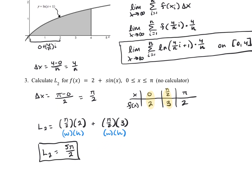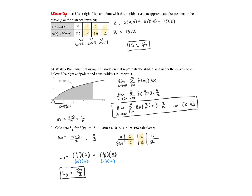For number 3, when it says calculate L sub 2 — that's a left Riemann sum with 2 subintervals, so 2 rectangles. If we're splitting into 2 rectangles, we subtract the upper endpoint minus the lower endpoint and divide by 2, so each rectangle is π/2 units wide. Using a t-chart: 0, π/2, and π. Since we're doing a left Riemann sum, we use these two y values for our heights. Width is π/2, first height is 2, second height is 3 — the overall sum is 5π/2.